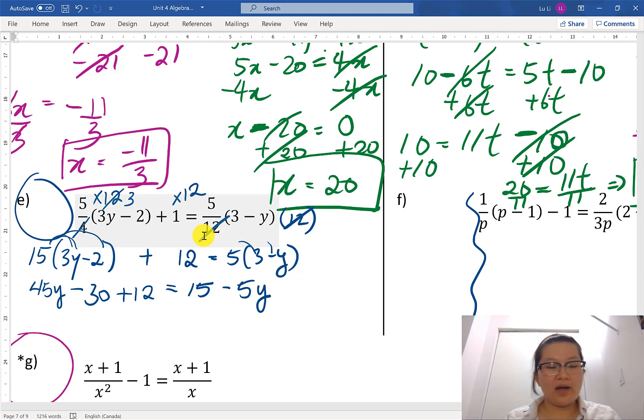We got a whole whack ton of numbers and a whole whack ton of variables. So let's combine our like terms. I'm gonna make these a little bit simple here. So I'm gonna combine this negative 30 with the 12. That's going to be 45y minus 30 plus 12. And that's gonna give us negative 18. Negative 18 equals to 15 minus 5y.